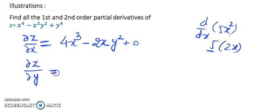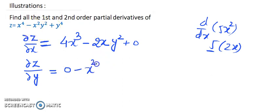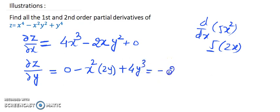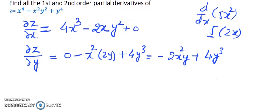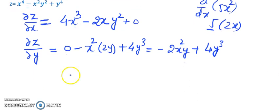Now for ∂z/∂y, we go back to the function. The term x⁴ has no y, so it gives 0. For −x²y², x² is constant so we differentiate y², giving −2x²y. For y⁴, differentiating gives 4y³. Therefore ∂z/∂y = −2x²y + 4y³.